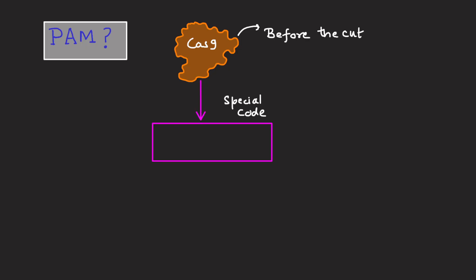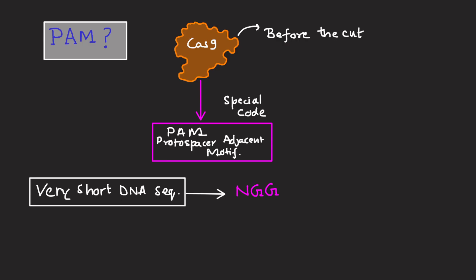Next is what is PAM. Before Cas9 can cut, it checks for a special code near the target site. It's called PAM, which is shorter form for protospacer adjacent motif. It is a very short DNA sequence like NGG found next to the virus target sequence.